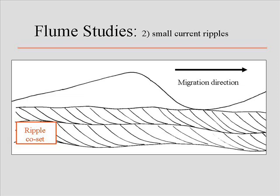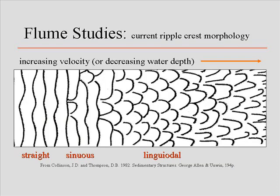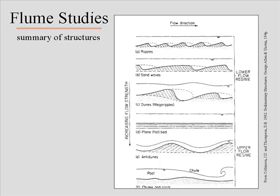We talked about different patterns of ripples. The ones we saw in the movie were more linguoidal. Straight-crested ripples tend to form under lower flow regimes; as you get to higher flow regimes it goes from straight to sinuous to linguoidal and ultimately to lunate. And lastly, the diagram illustrating all these structures together was key — looking at how a flume works tells you what conditions were like when you find these structures in the rock record.